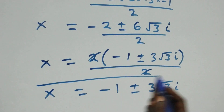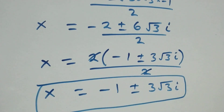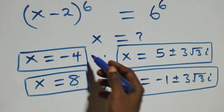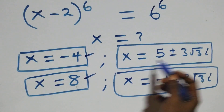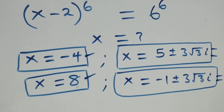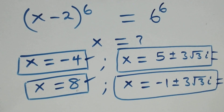Therefore, all together we have 6 solutions in this given problem: two real solutions x equals minus 4 and x equals 8, two complex solutions 5 plus or minus 3 root 3 i, and two complex solutions minus 1 plus or minus 3 root 3 i. Thank you for watching. Don't forget to subscribe for more videos, turn the notification bell on, share this video, give a thumbs up, and put your comments. See you next time, bye for now.